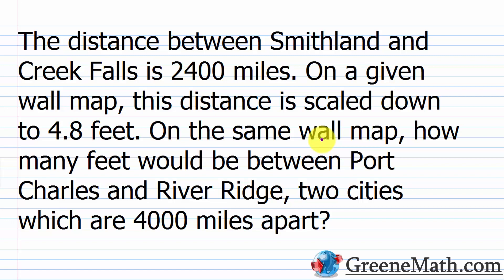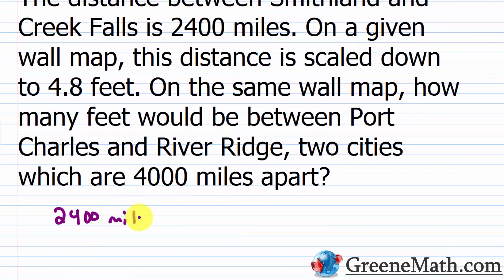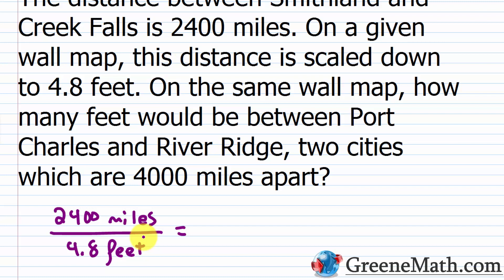The distance between Smithland and Creek Falls is 2400 miles; on a given wall map, this scales down to 4.8 feet. On the same map, how many feet would be between Port Charles and River Ridge, which are 4000 miles apart? We set up the proportion: 2400 miles/4.8 feet = 4000 miles/x feet.